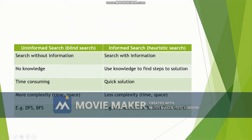The first difference: uninformed search is performed without any prior information, whereas in informed search some prior information is given. In uninformed search we have no knowledge, while in informed search we use knowledge to find steps to solutions. Uninformed search is time-consuming, while informed search provides quicker solutions. Uninformed search has more time complexity and space complexity, while informed search has less time complexity and space complexity.